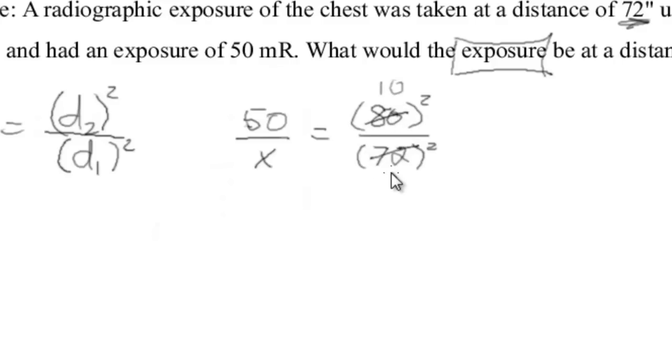So we got 10 over 9. And we have to square those. Don't forget to square them. Remember the distance is squared. So 10 squared is going to be 100 over 9 squared is 81. Now here's where I like to pull the calculator out.